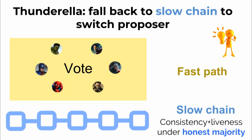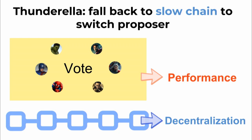The idea behind Thunderella is very simple. Take the fast voting protocol — let's call that the fast path — and imagine there's a separate slow chain. You can think of this as Ethereum, but it can also be a proof-of-stake slow chain. The slow chain satisfies consistency and liveness under honest majority — whether in computing power or in stake. If the fast path ever fails, the slow chain is still there so people can still use it to reach consensus and to discuss how to re-bootstrap the fast path, like how to switch to the next proposer.